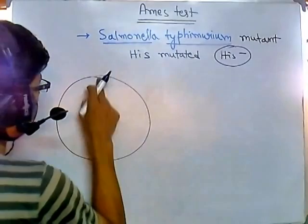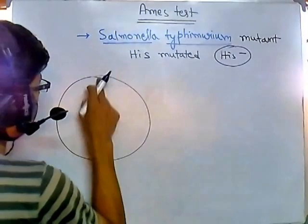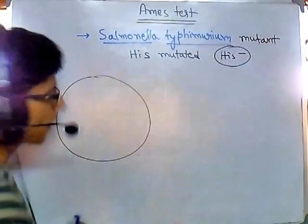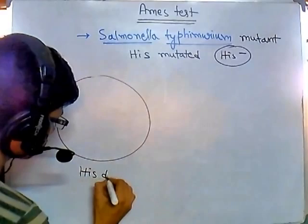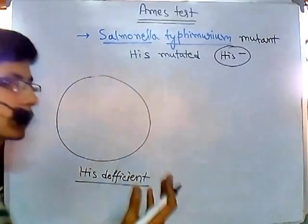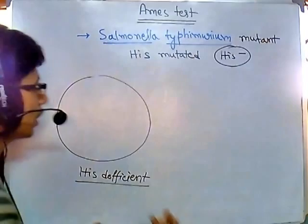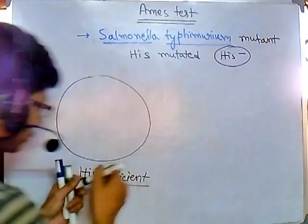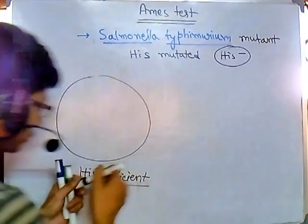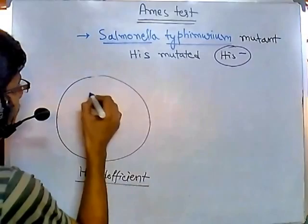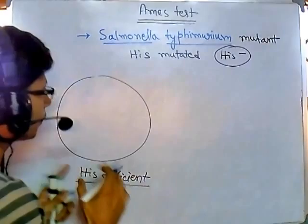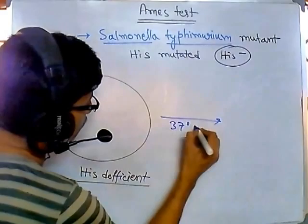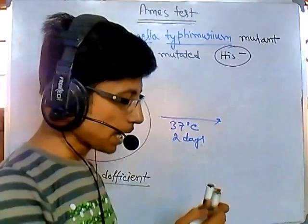We take this histidine-minus strain and place it on a plate containing normal media, except that it is histidine-deficient — all required nutritional sources are present except histidine. Since the bacteria also cannot produce histidine, they cannot grow on this plate. We take a loopful of bacterial culture, streak it onto the plate, and incubate at 37°C for 48 hours, then check for bacterial growth.